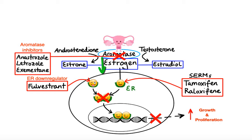Although GnRH agonists can be helpful in treatment of women with breast cancer, they are more often used in treatment of men with prostate cancer. In males, luteinizing hormone directs the testes to produce testosterone. Free-circulating testosterone can enter prostate cells, where with the help of the 5-alpha-reductase enzyme it can be converted to its more potent metabolite dihydrotestosterone, which then binds to the androgen receptor (AR). This hormone-receptor complex dimerizes with another hormone-bound receptor and translocates into the nucleus, where it binds to specific DNA sequences, triggering expression of genes involved in cell growth and proliferation.